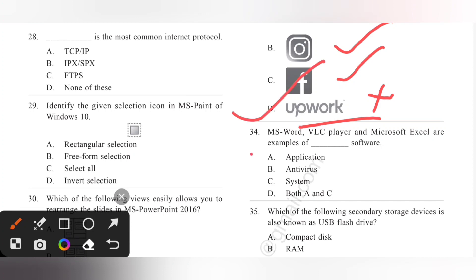Question 34: MS Word, VLC Player and Microsoft Excel are examples of dash software. So, these are all examples of application software. So, option A is the correct answer. Application software.